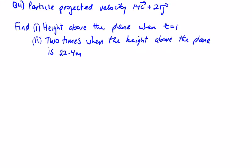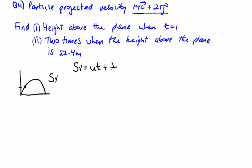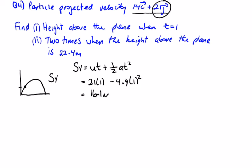Question 4: initial velocity 49i + 21j m/s. Find the height above the plane when t = 1. s_y = ut + ½at² = 21(1) − 4.9(1²) = 21 − 4.9 = 16.1 meters.